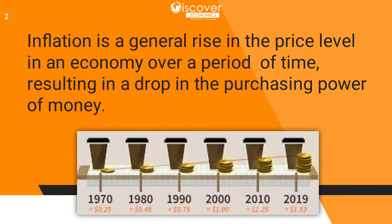For example, if in 1970 you had $0.25 in your pocket you were able to buy a product, but after 10 years you needed $0.45 to buy the same quantity. And by 2019, you needed $1.59 in your pocket to buy the same level of product. This money is performing the same work — and that is due to inflation.